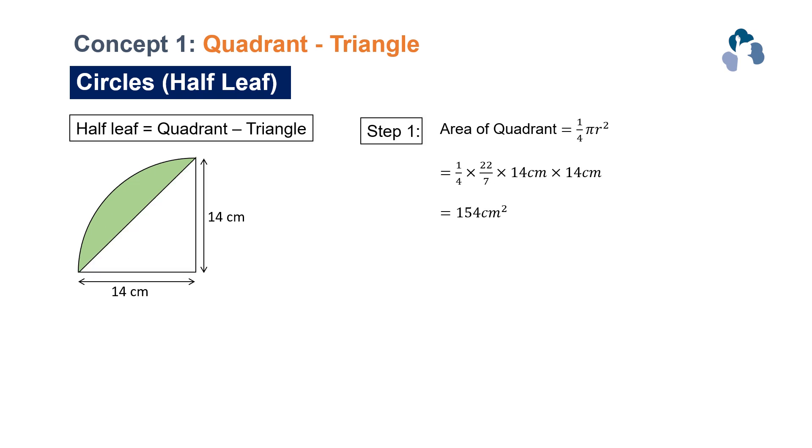Step 1, find the area of the quadrant. You would have already learnt the formula of the circle. So to find the area of the quadrant, you just have to take 1 quarter multiplied by the area of the circle, which is ¼ × π × r × r.